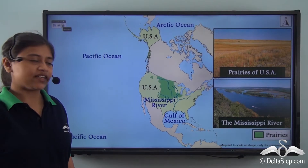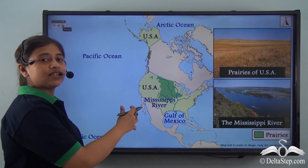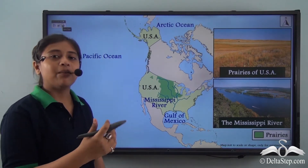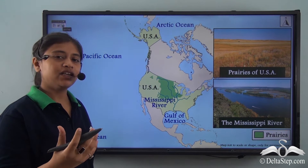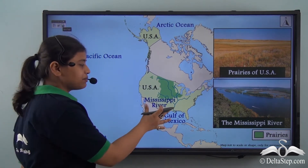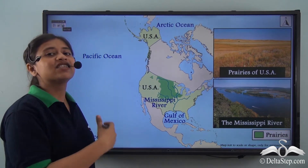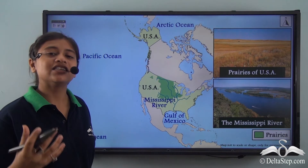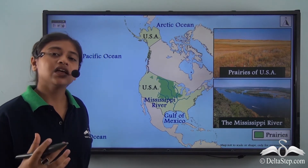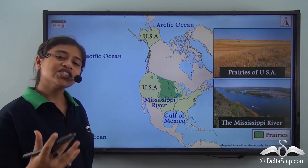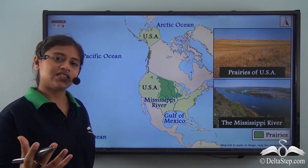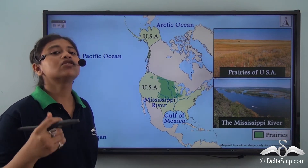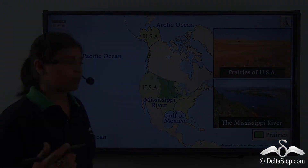The prairies of the United States of America are drained by the mighty Mississippi River and its tributaries. The Mississippi River is not only the largest drainage system of the continent but also the most important one.